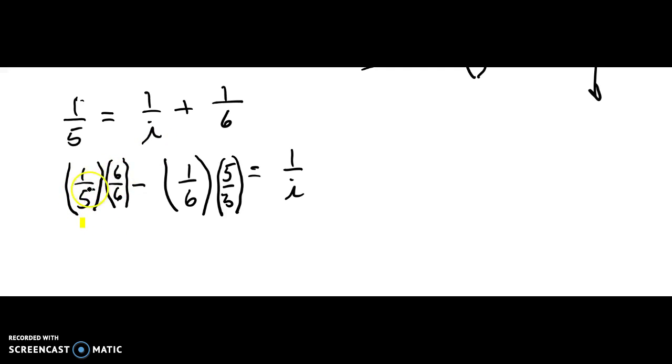So when I multiply fractions, I just multiply straight across. So 1 times 6 is 6. 5 times 6 is 30. Minus sign is still there. 1 times 5 is 5. 6 times 5 is 30. And then that equals 1 over I.